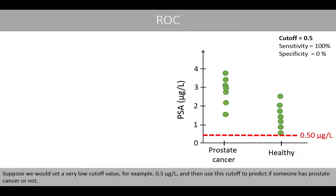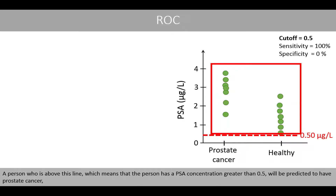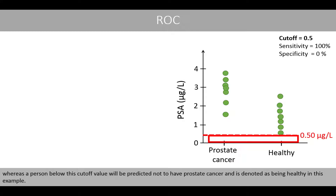Suppose we set a very low cutoff value, for example 0.5 micrograms per liter, and use this cutoff value to predict if someone has prostate cancer or not. A person above this line — with a PSA concentration greater than 0.5 — will be predicted to have prostate cancer, whereas a person below this cutoff will be predicted to be healthy.